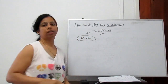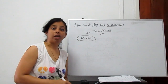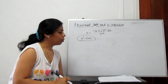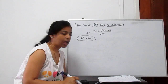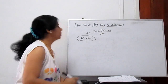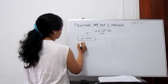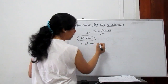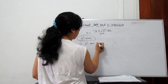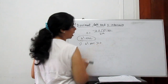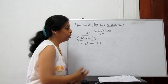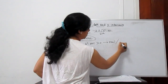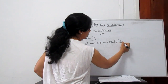The discriminant B² − 4AC can give you the nature of a given equation. There are some rules. First, if B² − 4AC is positive — greater than 0 — the equation has real and distinct roots.